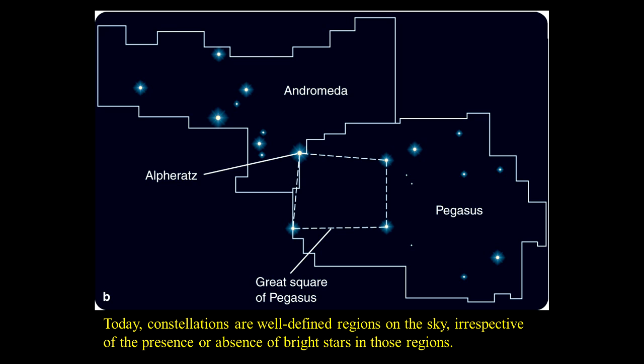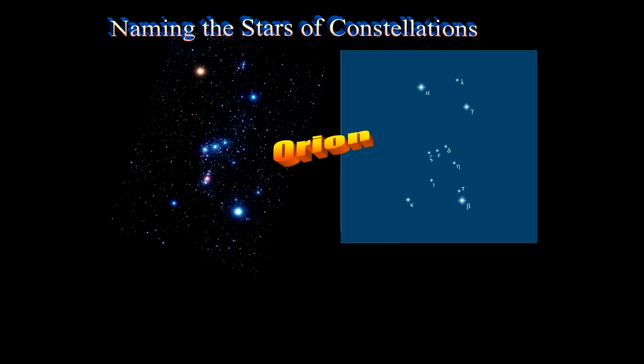Here's an example of a couple of them. We have Andromeda and Pegasus and the Great Square of Pegasus. And here's a star that's shared between two constellations.